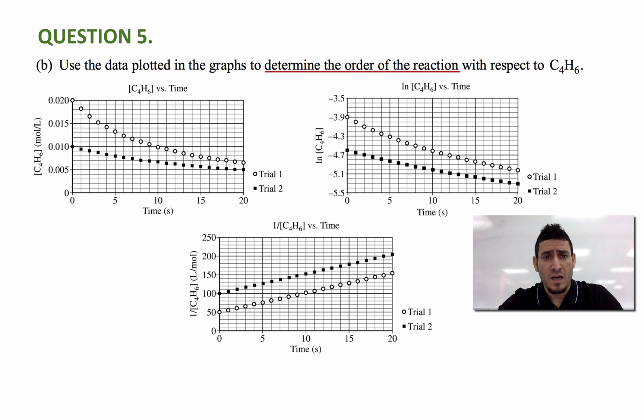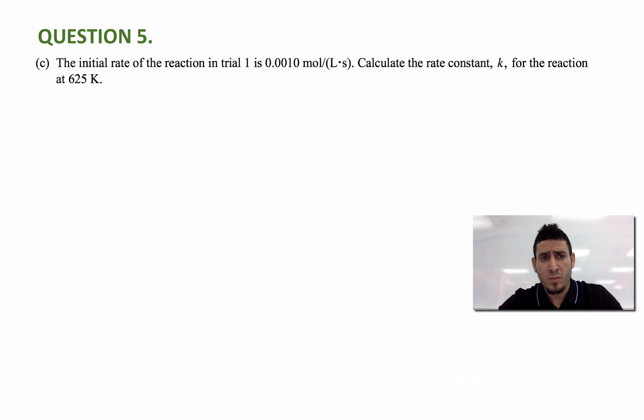If I take a look at the graphs again, I can see that the plot of 1 over concentration versus time gives me a straight line, and this means that the reaction is second order in concentration of C4H6.